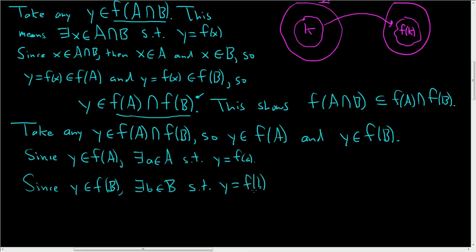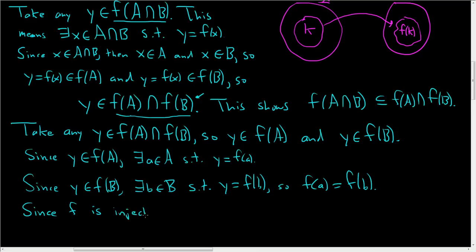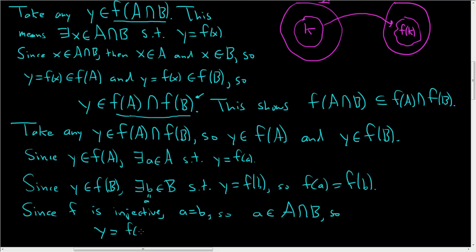So Y is equal to F of a and Y is equal to F of b, which means F of a is equal to F of b. But F is injective, so since F is injective, little a is equal to little b. So we know that little a is in capital A, and since little a equals little b, little a is also in capital B. So little a is in A intersect B, and therefore Y, which is equal to F of a, is in F of A intersection B.